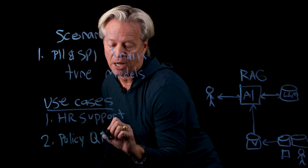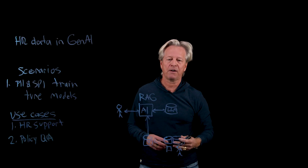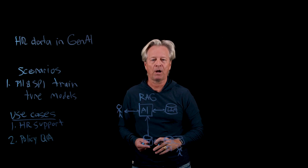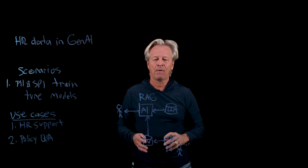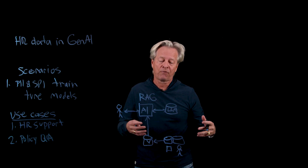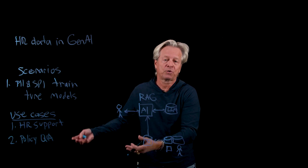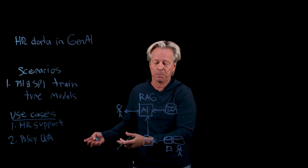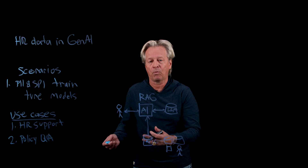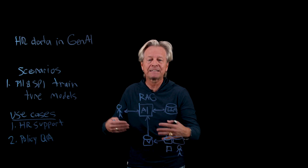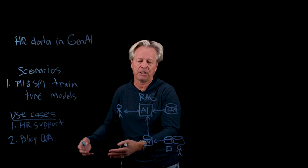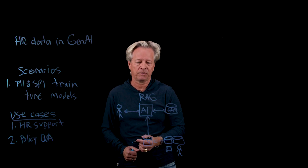The second use case we're going to look at is a policy question and answer chatbot. This covers general information around policies — around travel, around hiring new employees, around whatever things you need general information on for HR policies — and you just want to do a Q&A and get a quick response back. The nice thing about having this as part of our Gen AI or RAG model is that we can have consistency in our responses when people query. This can be used by managers or whoever needs to use it.